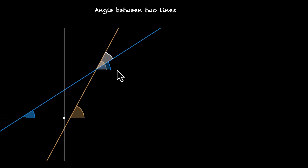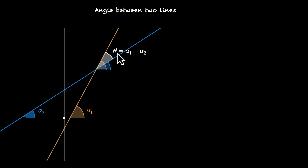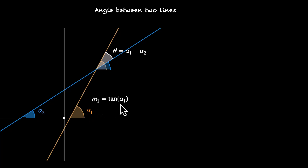Let's do that. This angle is alpha one and this one is alpha two. So these two angles are given. The angle between the lines is theta, which equals alpha one minus alpha two. The slope of this line is M1, that's tan alpha one, and the slope of this line is M2, that's tan alpha two.